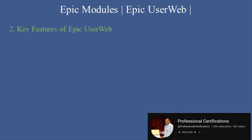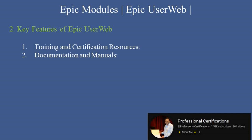Key Features of Epic UserWeb: Let's explore the main features that make Epic UserWeb invaluable for Epic users. First, Training and Certification Resources — access online training modules, certification guides, and study materials. Second, Documentation and Manuals — download technical documentation, user manuals, and best practice guides.